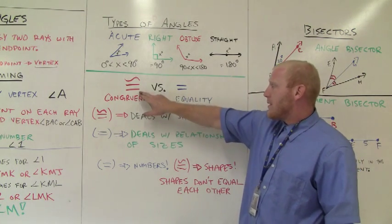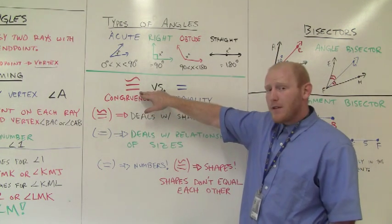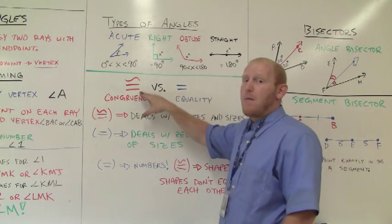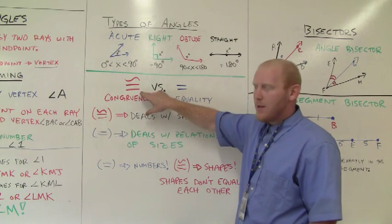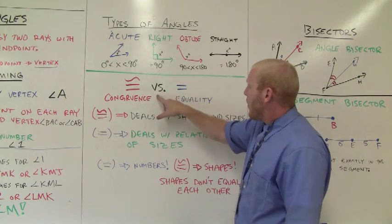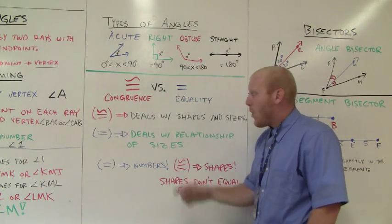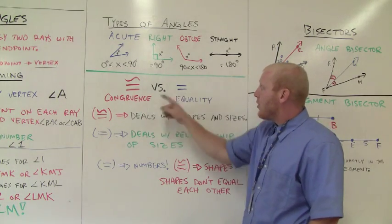This is called a congruence symbol. You need to learn to love this symbol. I will use this symbol from here on out. I don't want to write out the word congruence. It's too long. This is my symbol. I'm going to use it. Versus equals—equality. What's the difference between congruence and equality?